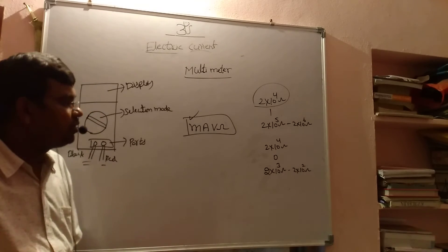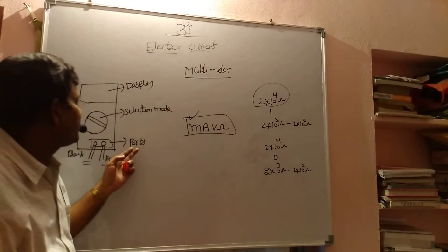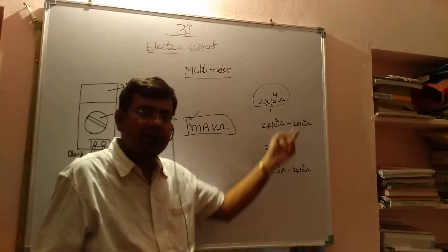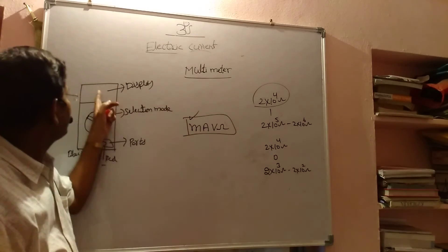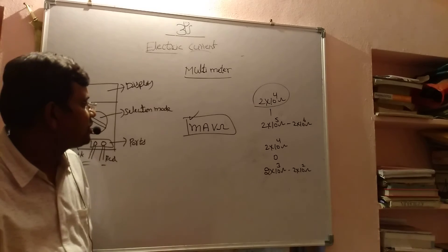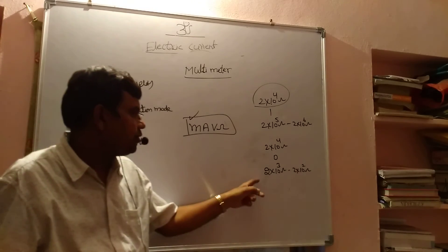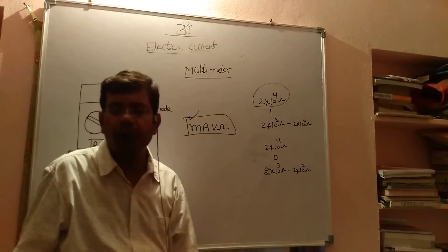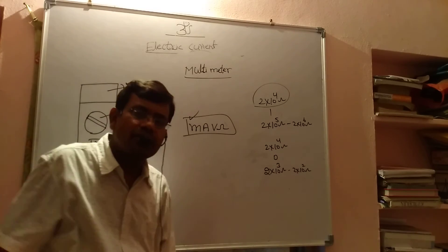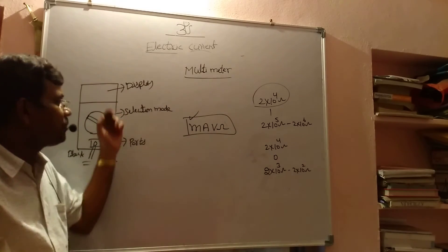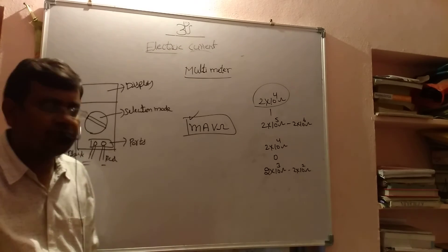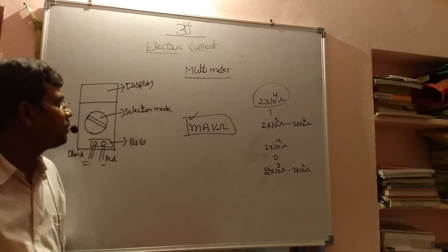For example, when I am adjusting the ohm port and selection mode also to ohm, and 2×10⁴ ohms I had given, at that time zero came on the display. At that time you adjust the ohm from 2×10³ ohms to 2×10² ohms. In that adjustment, at one point we are getting the resistance in the circuit. So that is the process to find the resistance by using the multimeter.